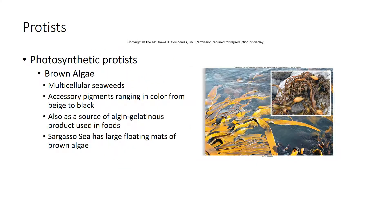Brown algae is just seaweed too. It ranges in color from a tan to a blackish color, and you see that with kelps. There are parts of the world like the Sargasso Sea that has lots of brown algae — the Sargasso Sea is in the North Atlantic Ocean.